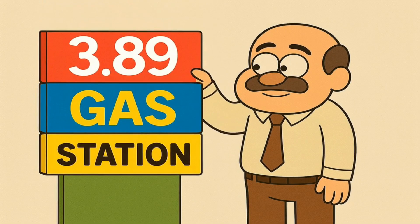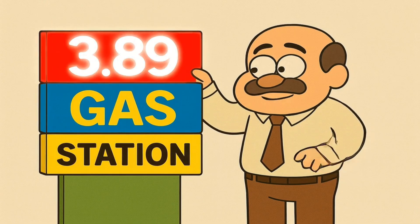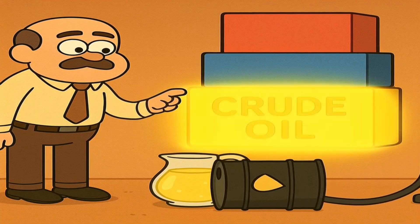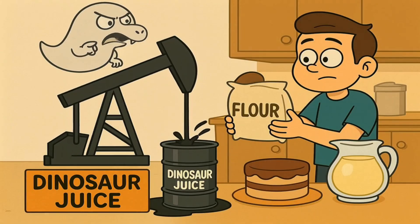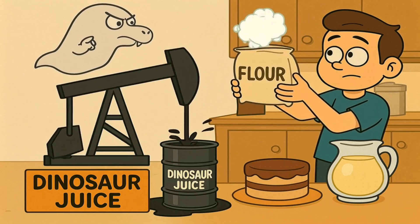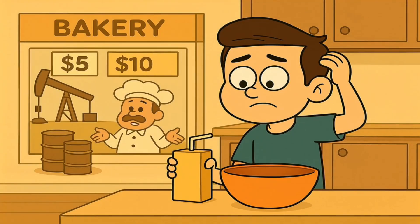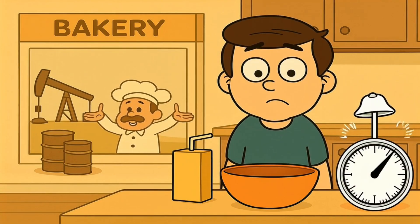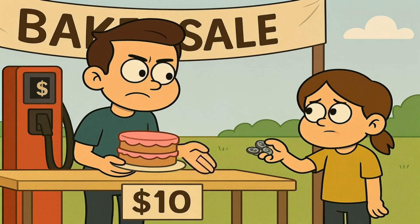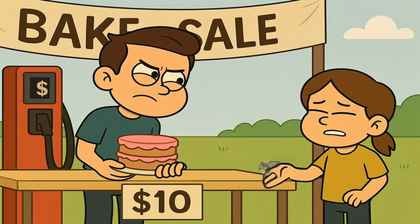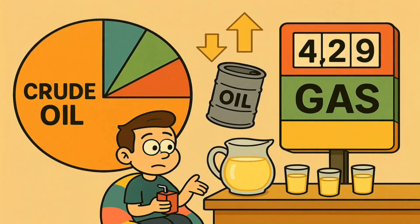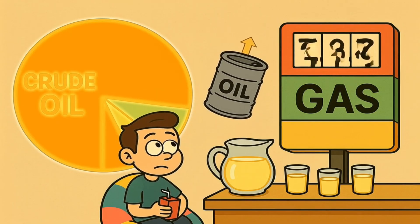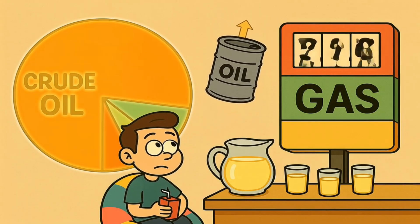The price changes because the amount of gasoline available and the number of people who want it are always, always changing. It is a never-ending game of tug-of-war. So let's look at the four main things that decide who wins that game — four giant building blocks that stack up to make the final price on the sign. The first and biggest block is the price of the main ingredient: crude oil. You can't make gasoline without crude oil. It's the dinosaur juice that we suck out of the ground. It's like the flour you need to make a cake — if the price of flour suddenly doubles, then the price of your cake is going to go up too. Crude oil is the biggest part of the cost of gasoline, usually more than half. So when the price of crude oil goes up, the price of gas is definitely going to go up.